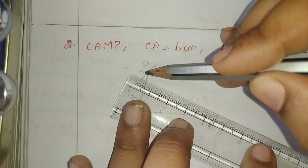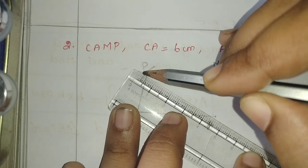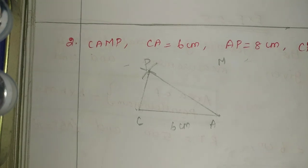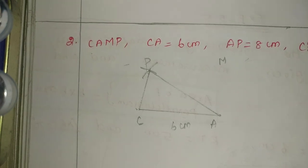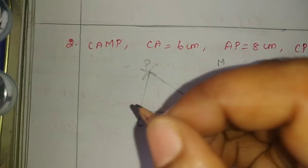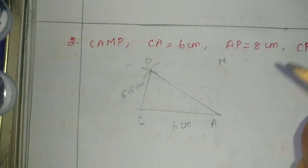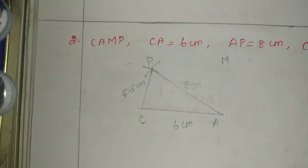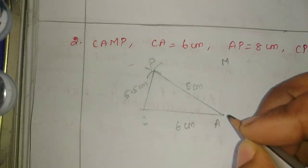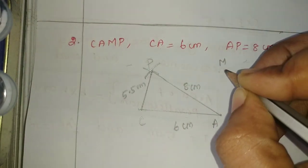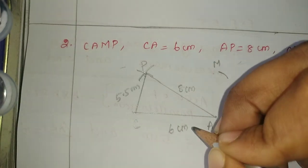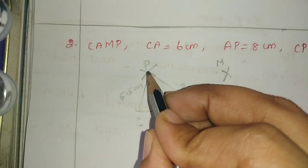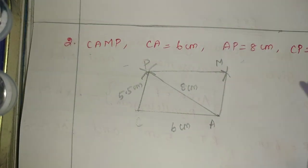So the diagonal part join. Now write CP 5.5 cm, diagonal of AP 8 cm. This is parallelogram, opposite sides are equal. So here's 5.5, here's the measurement. Arc 5.5. And then join.